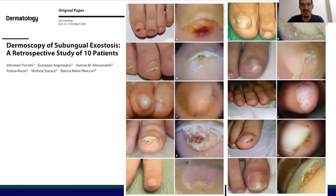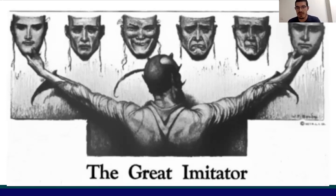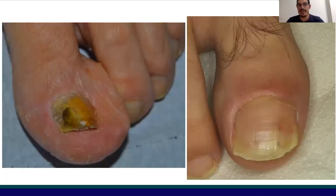I want to give you some information about differential diagnosis and how dermoscopy and onycoscopy can help us detect this great imitator — subungual exostosis. So we have two conditions. You will always see subungual exostosis compared with another disease.